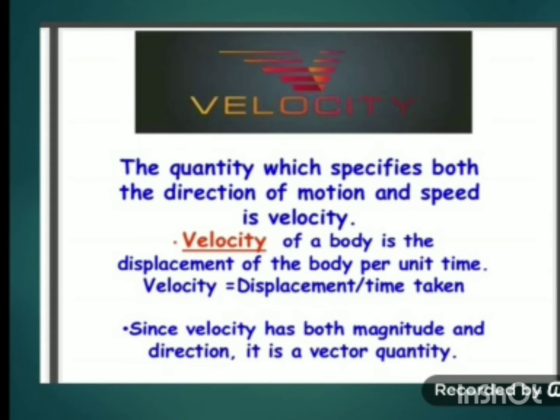If the velocity of an object is changing at a uniform rate, then instead of velocity we use average velocity. Average velocity can be calculated as initial velocity plus final velocity divided by 2 — that is, v_av = (u + v) / 2. The unit of both speed and velocity is the same: meter per second.